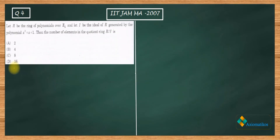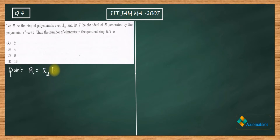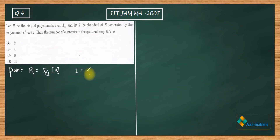So R is the ring of polynomials over Z₂, which means R = Z₂[x]. And I is an ideal generated by the polynomial x³+x+1.